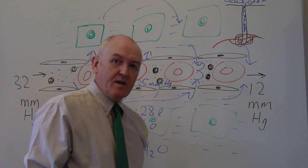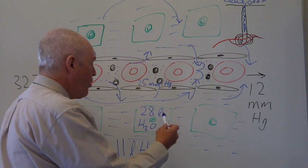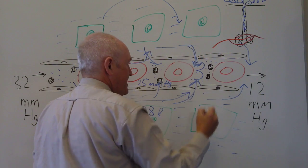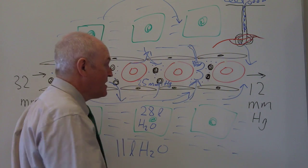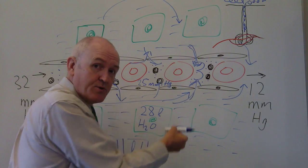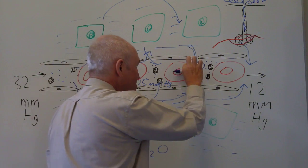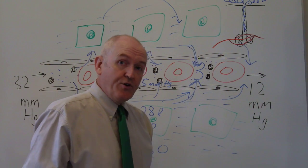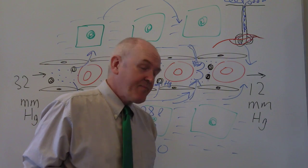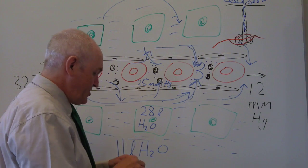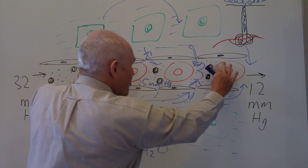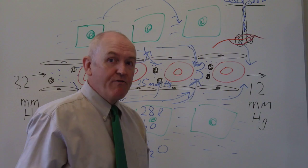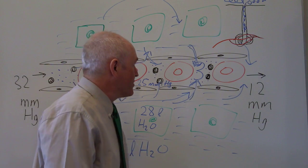More fluid will be absorbed, particularly from the venous end of the capillary, so we'll get fluid moving from the interstitial compartment into the intravascular compartment. That will restore the volume of the intravascular compartment, and this is absolutely essential — if we don't restore the volume in the intravascular compartment, that will lead to hypovolemic shock and the blood volume will drop.